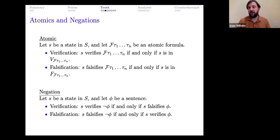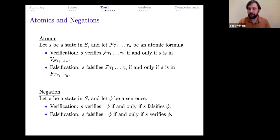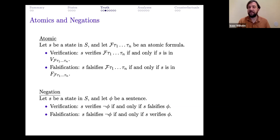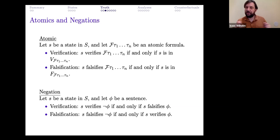V_φ is the set of all states which make formula φ true; F_φ is the set of all states which make φ false. The basic starting truth condition says: to verify a state is to be in the set of verifiers, and to falsify a state is to be in the set of falsifiers. For negation: a state S verifies 'not φ' if and only if S falsifies φ, and S falsifies 'not φ' if and only if S verifies φ. Verification and falsification are symmetric under negation.